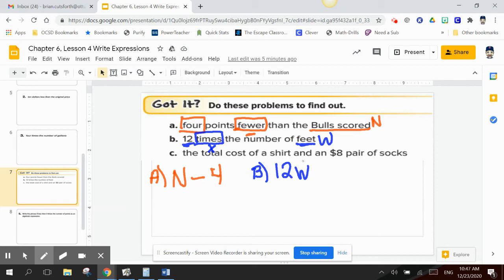Please pause the video and try letter C on your own. C is asking the total cost of a shirt and an $8 pair of socks. The total cost. Total cost of a shirt. Well, how much does a shirt cost? We don't know. That's our variable. We'll say that's W. Total. Total tells me I have to add two numbers together to find the total. So that means to add. And what am I going to add to the cost of the shirt? $8 for a pair of socks. So our expression is W, the shirt, plus $8.